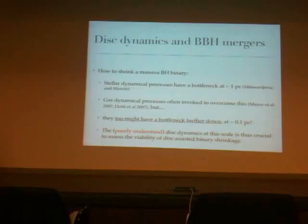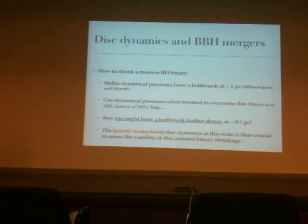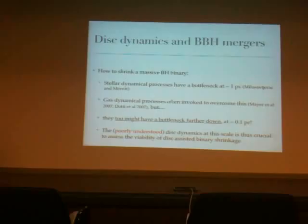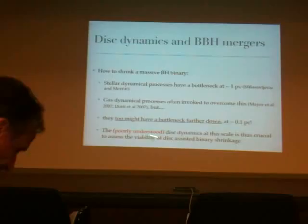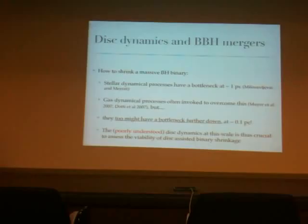The first problem is how to shrink a black hole binary. It's well known that stellar dynamical processes have a bottleneck at 1 parsec, and very often gas dynamical processes are invoked to overcome this limit. However, the gas dynamical process too might have a bottleneck — not at 1 parsec, but maybe at a scale of 0.1 parsec. We need to understand the dynamics at this scale if we want to understand whether gas discs can allow the merger of a black hole binary. This region is really poorly understood and quite crucial.